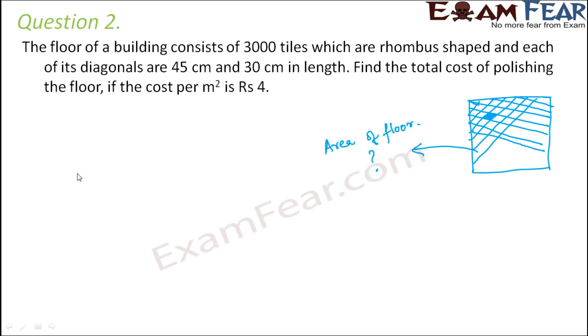So how do we find out the area of the floor? So area of the floor would be equal to the area of the 3000 tiles and each tile is a rhombus. So basically if you are able to find out the area of the 3000 rhombus, this area of 3000 rhombuses is the area of the floor.